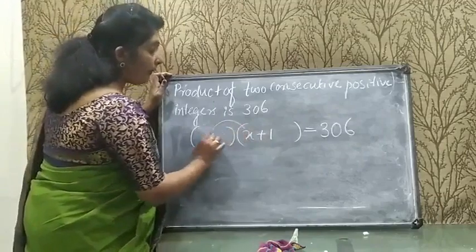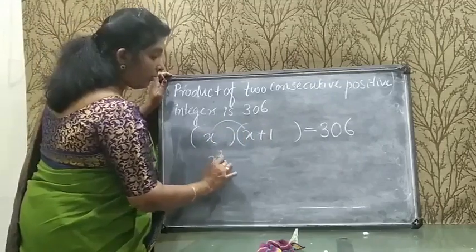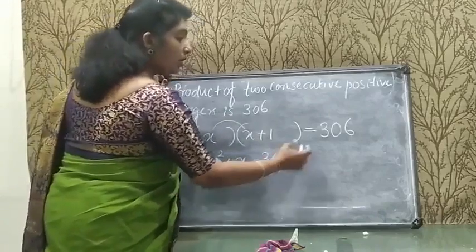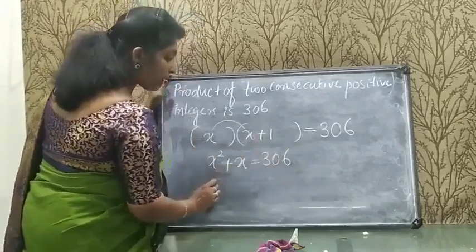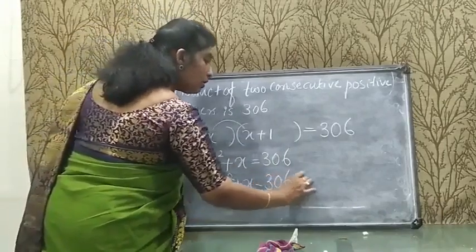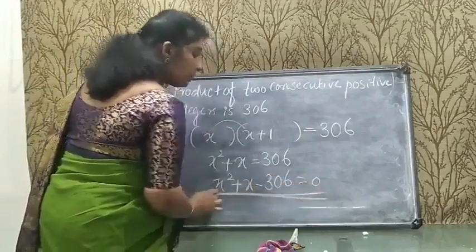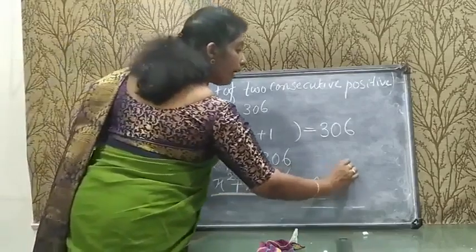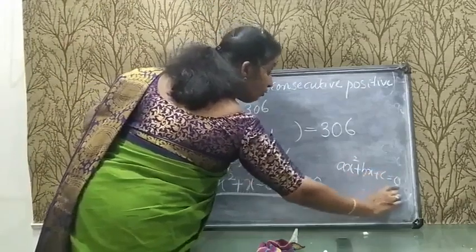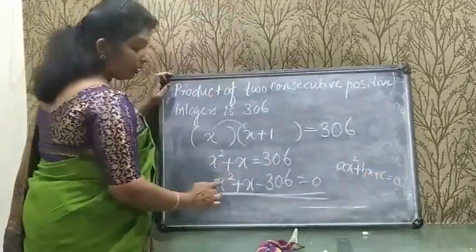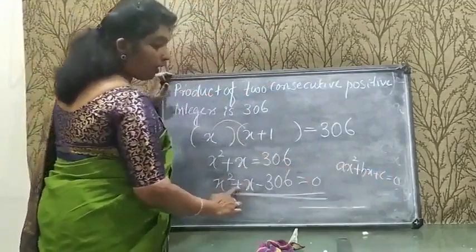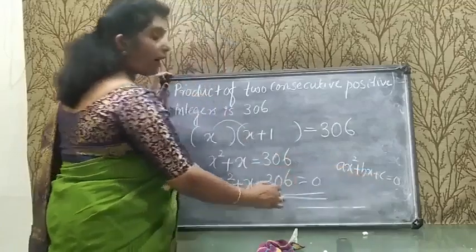Opening the bracket: x² + x = 306. Shifting the constant to the left: x² + x − 306 = 0. This is the general form of a quadratic equation where a = 1, b = 1, and c = −306.